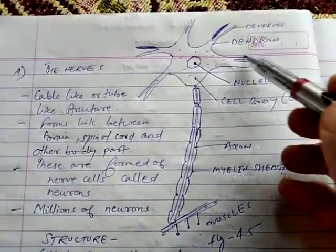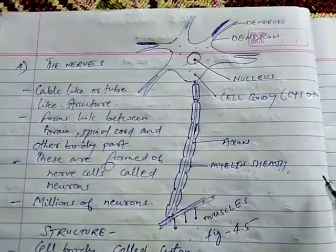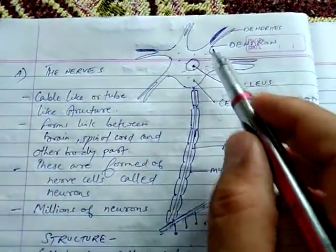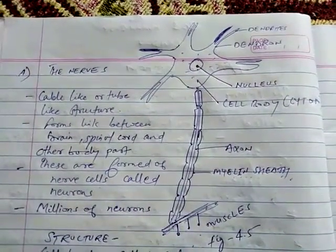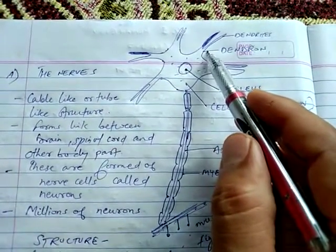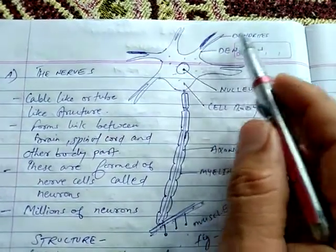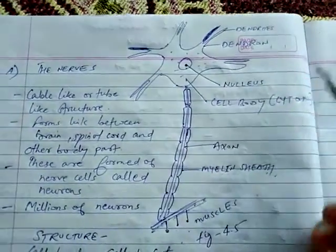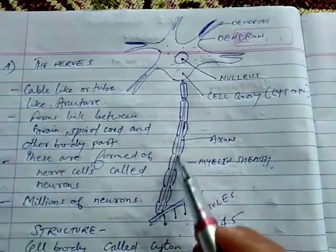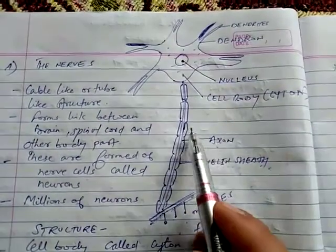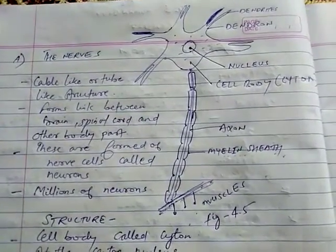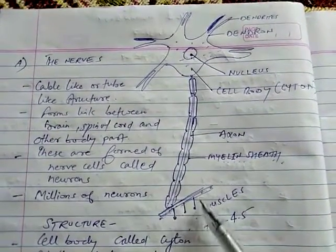This is the structure of a neuron. The star-shaped structure is the cell body, that is, the cytone. From the cytone there are dendrons, which are further branched and are known as dendrites. There is also a nucleus, and a tail-like structure known as the axon, which is coated by a sheath called the myelin sheath. The end portion is known as axon terminals.